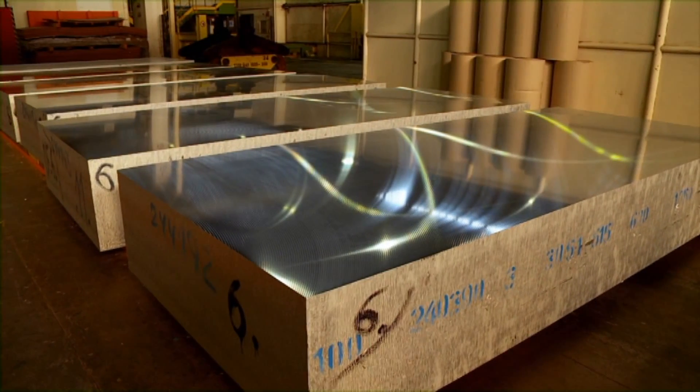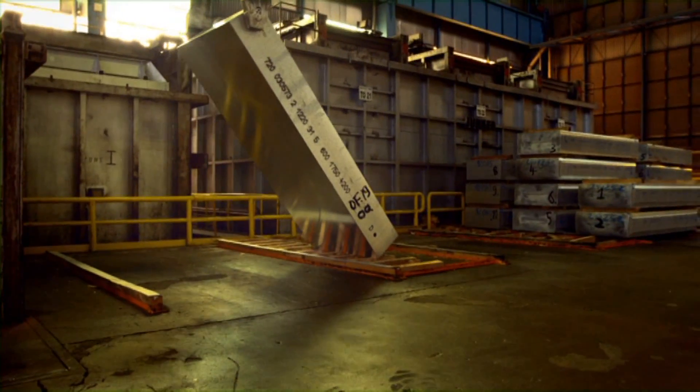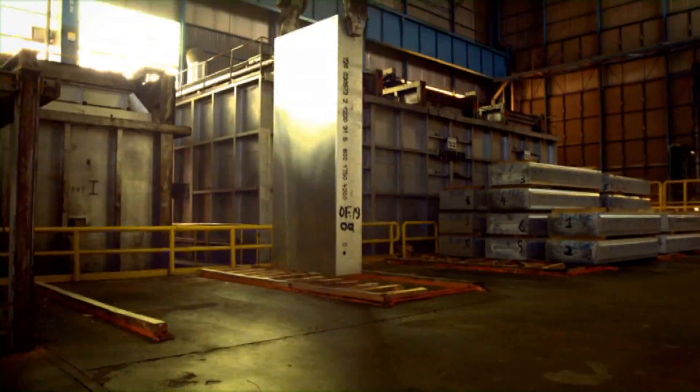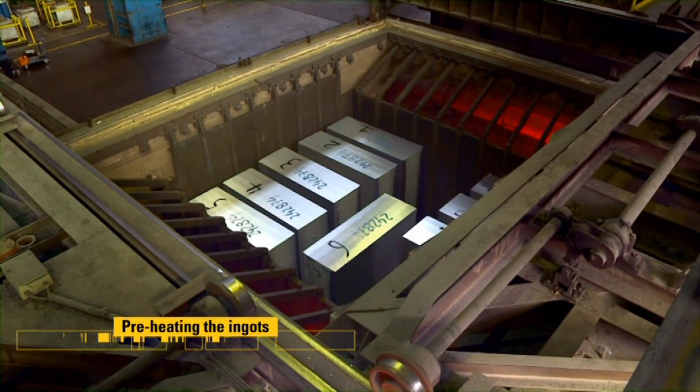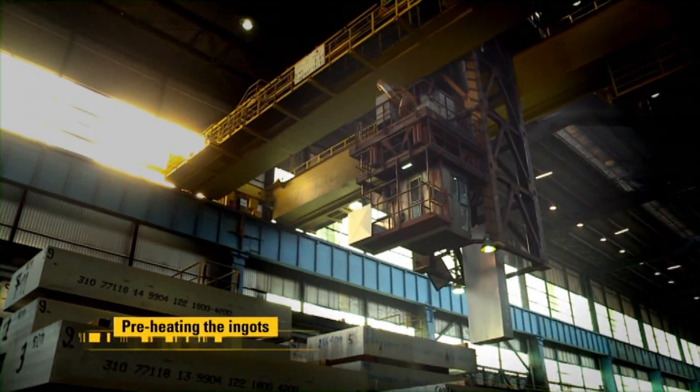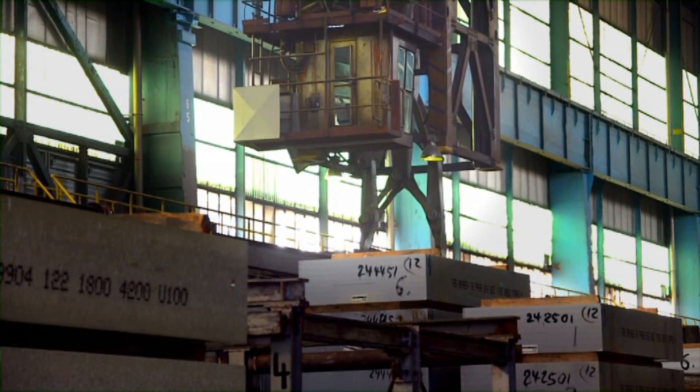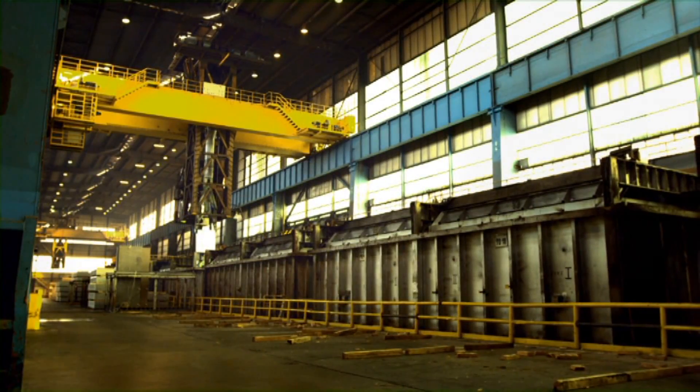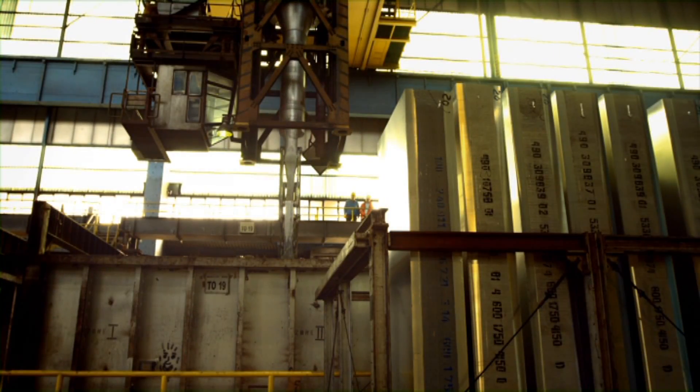We will now see how these raw blocks of aluminum are transformed into rolls. At 500 degrees Celsius the ingots are preheated to prepare them for hot rolling. This process ensures that both the inside and outside temperatures of the ingots are equal which is necessary for these massive blocks of aluminum to be trimmed down in the hot rolling section.